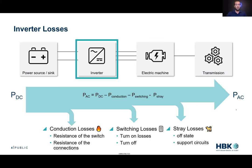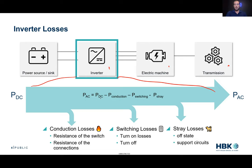Breaking it down component by component: we have the battery, the inverter converting DC to AC using switches, the electric machine converting AC to torque and speed, and then the gearbox or transmission output. I'll focus on the inverter and electric machine today. Coming into the inverter, we have our DC power. The AC output power is that DC power minus conduction losses, minus switching losses, and minus stray losses — the resistance of the switch, the turn-on/turn-off losses, and supporting electronics.